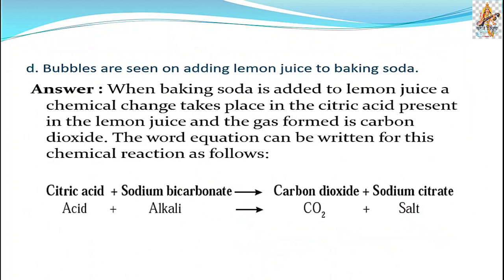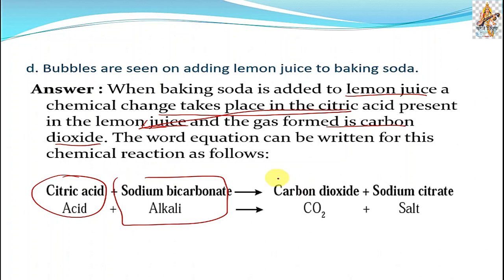Part d: Bubbles are seen on adding lemon juice to baking soda. When baking soda is added to lemon juice, a chemical change takes place. In citric acid present in lemon juice, and gas formed is carbon dioxide. The word equation is given here: citric acid means lemon, sodium bicarbonate means alkali, carbon dioxide means CO2 plus sodium citrate is formed.